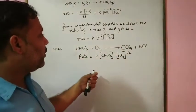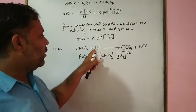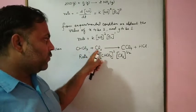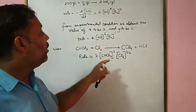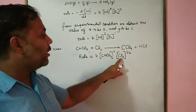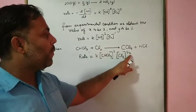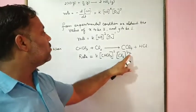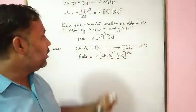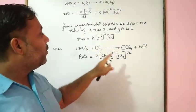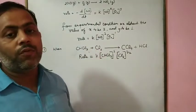In this relation, we observe that the power of CHCl₃ is 1 and its stoichiometric coefficient is also 1 — those match. But for Cl₂, the power is 1/2, whereas the stoichiometric coefficient is 1. So the power raised to Cl₂ is not equal to its stoichiometric coefficient.